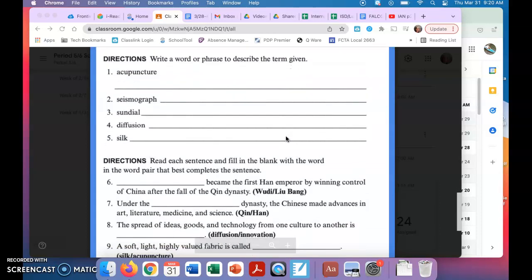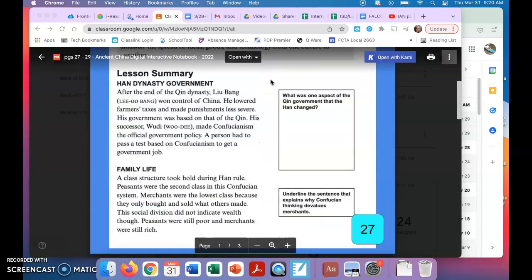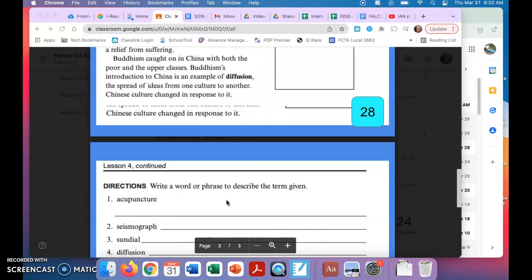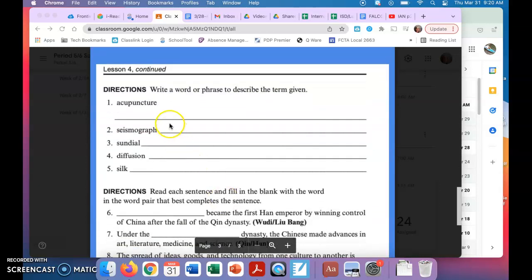All right, your last page. First section, you're going to write a word or phrase to describe the term given and you can use your definitions from the key terms and people boxes here. Okay, so you're going to give me a phrase or the definition for acupuncture, seismograph, sundial, diffusion, and silk. And again, you can pause while you do this and then hit play when you're ready to go to the next section.